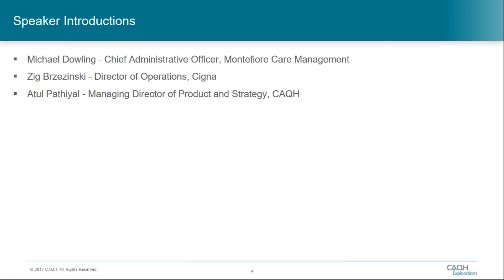My name is Atul Patil. I'm Managing Director for Product and Strategy at CAQH. Good afternoon, I'm Michael Dowling, the Chief Administrative Officer of Montefiore Care Management. Montefiore Care Management is a subsidiary of Montefiore Health System. We provide care management and MSO services to an 11-hospital system located in Bronx, New York, and the lower Hudson Valley of New York State. We have close to 6,000 physicians in our network and provide support for value-based arrangements supporting close to 400,000 covered lives. Part of my responsibility is to run the credentialing and provider information operation for the system — medical staff credentialing, delegated credentialing with all of our payers, and a robust network provider data management function.